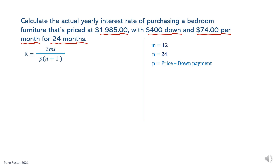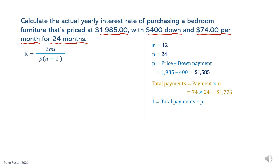P is the borrowed money after paying the down payment. P equals $1,985, which is the full price of the bedroom set, minus $400, which is the down payment. The borrowed amount is $1,585 — that's P. For I, the total payments are needed. Calculate the total by multiplying the amount of each payment, $74, times N, which is 24. The buyer will pay a total of $1,776 by the end of the 24th month, which is obviously more than P, the borrowed money. The difference between the total payments and P is I. Therefore, I is $1,776 minus $1,585, which equals $191.